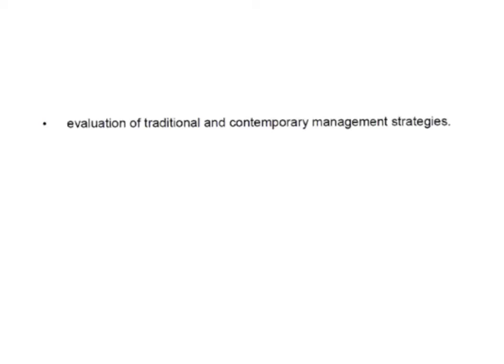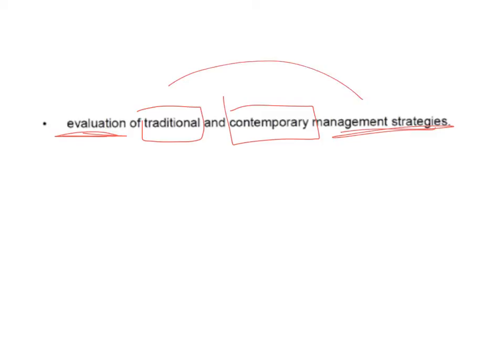We're going to continue looking at the ecosystems of risk syllabus dot points. The fourth dot point is the evaluation of traditional and contemporary management strategies. There are three different things we're looking at: traditional management strategies, contemporary management strategies, and then making a judgment and evaluation of those.